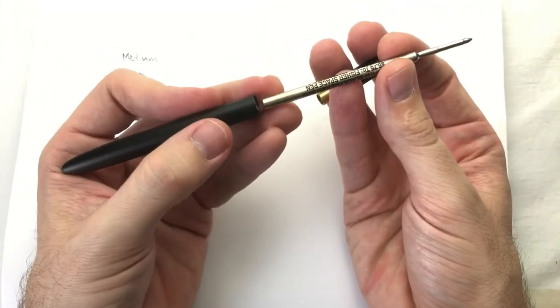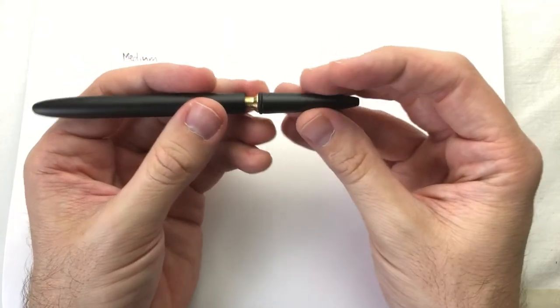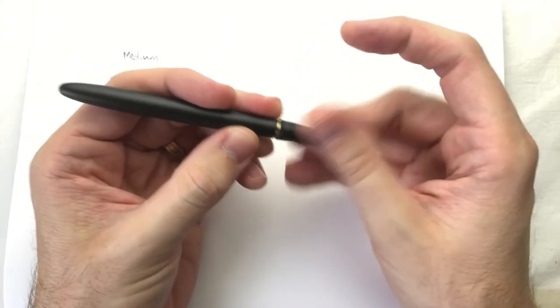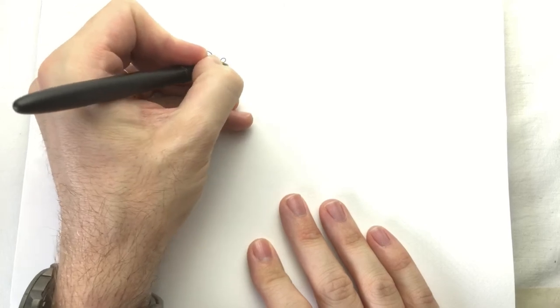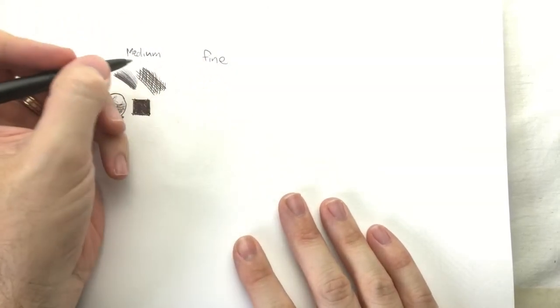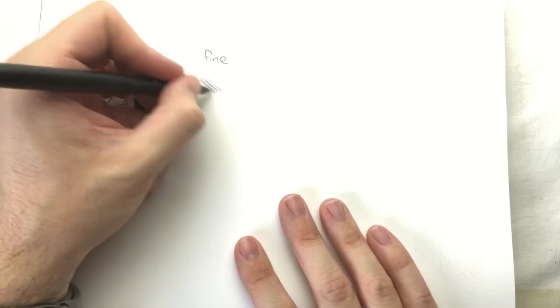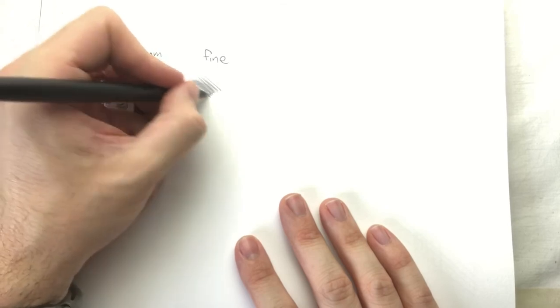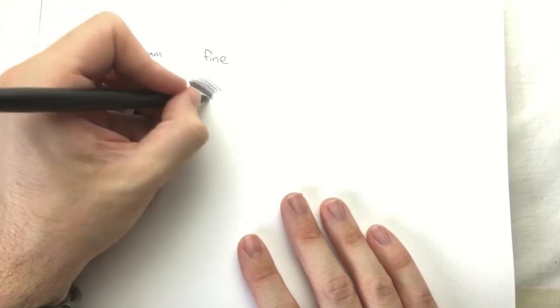But it's not too bad to write with. Let me just switch out the cartridges and we'll see what the fine is like. It takes a lot of turns to take out the cartridge. I think that's a good thing when you can't have it accidentally slip out. And this is with the fine. And I can already tell the difference. Definitely you're getting a finer line from this. You can still put in those lighter values and build up over time.